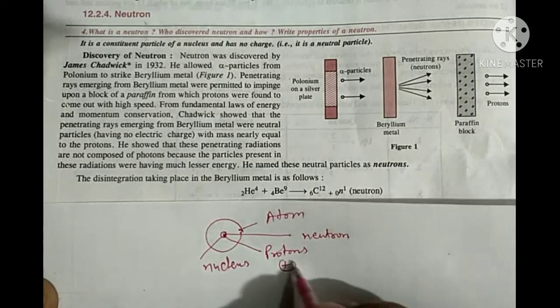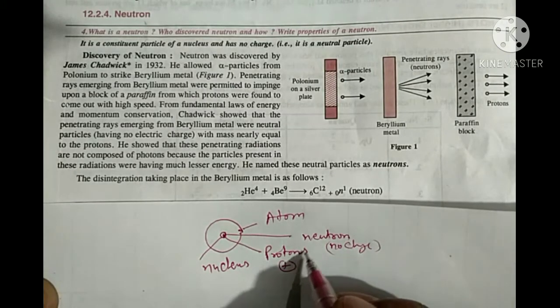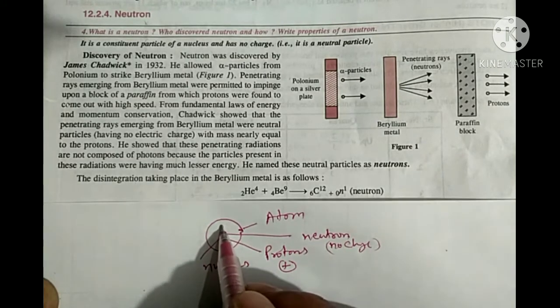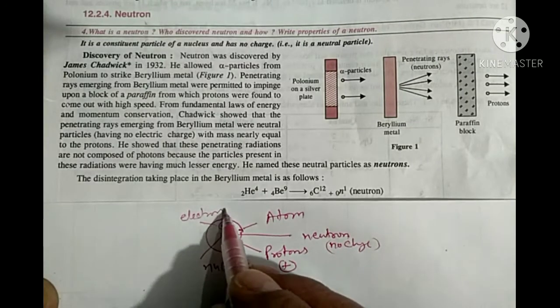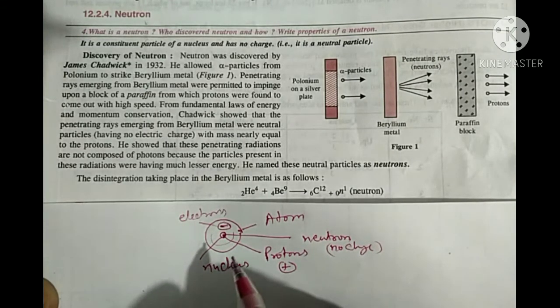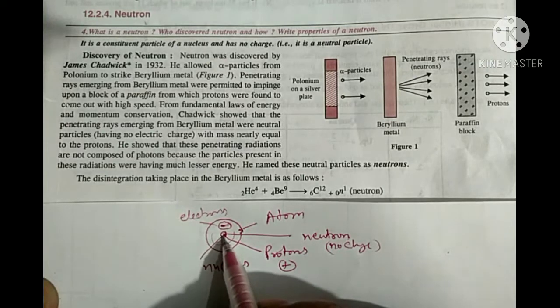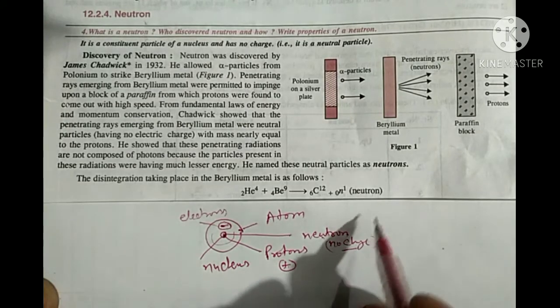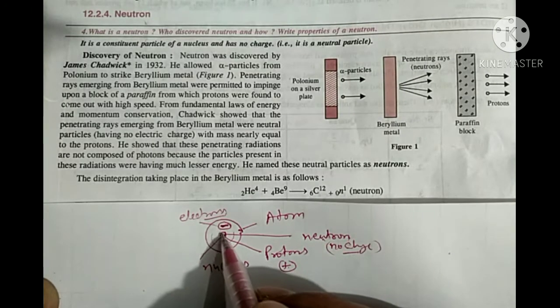Protons having positive charge, neutron has no charge on it, and the mass of protons and neutrons are equal. And another subatomic particle of an atom, that is electrons, revolves around the nucleus in a circular orbit.